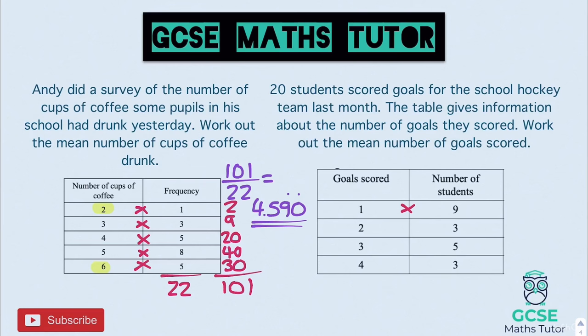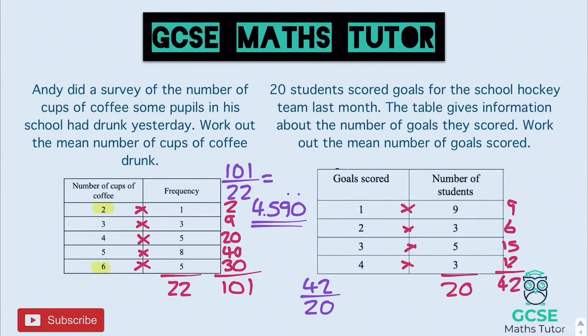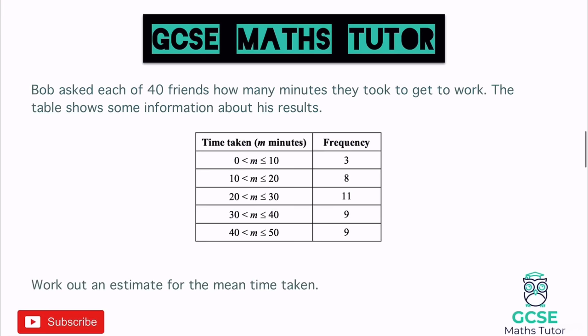The second question is about goals scored: 20 students scored goals for the hockey team. Multiplying across: 1×9=9, 2×3=6, 3×5=15, 4×3=12. Adding those: 9+6+15+12 = 42 total goals. We already know the total is 20, so 42 ÷ 20 = 2.1. In context, 2.1 goals per person makes sense, and that's our mean for the second question.